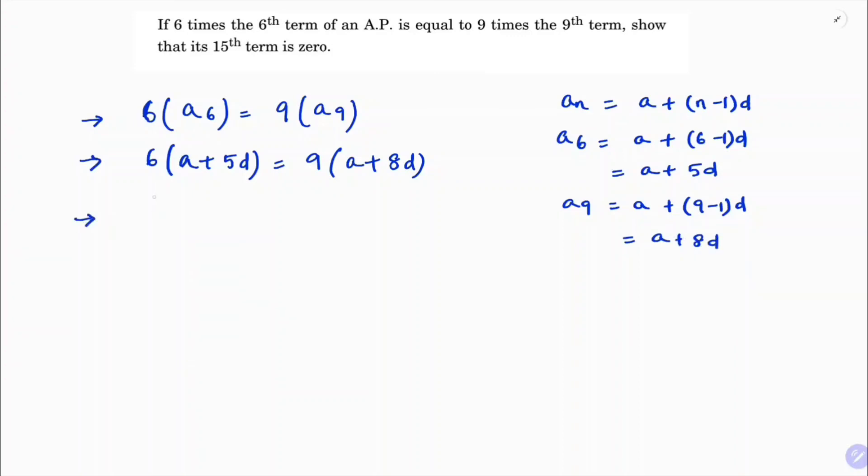Now if I will multiply 6 times A, 6A, 6 times 5, 30D, 9 times A, 9A, 9 times 8, 72D.